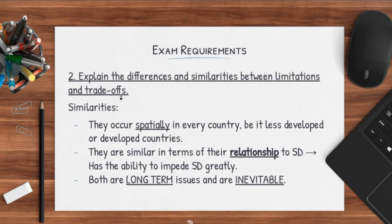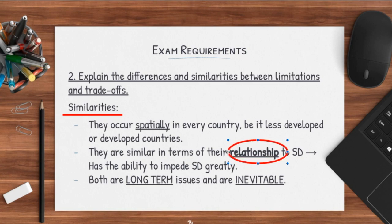Another exam question that could come up would be: explain the differences and similarities between limitations and trade-offs. Some similarities you can list: they both occur spatially in every country — always use the terms 'spatially' and 'temporally' as this captures the examiner's attention — and they can occur in both less developed and developed countries. They are also similar in that limitations and trade-offs can both harm the achieving of sustainable development. When you have limitations and trade-offs, your path to sustainable development won't be easy. As a result, they can both impede a country from achieving sustainable development.